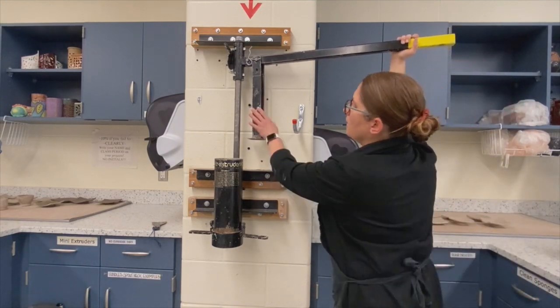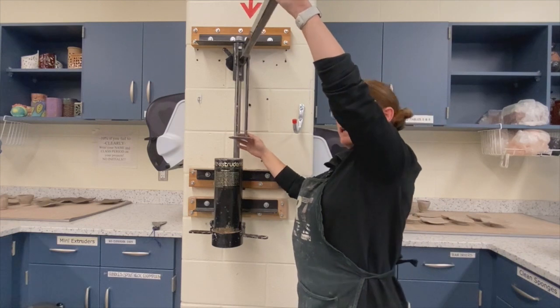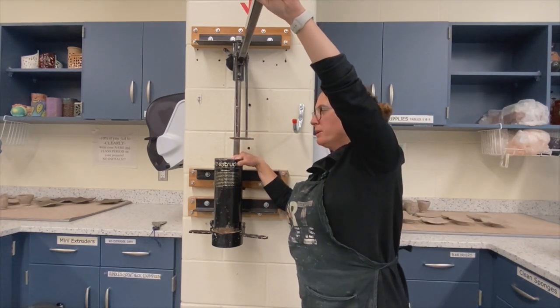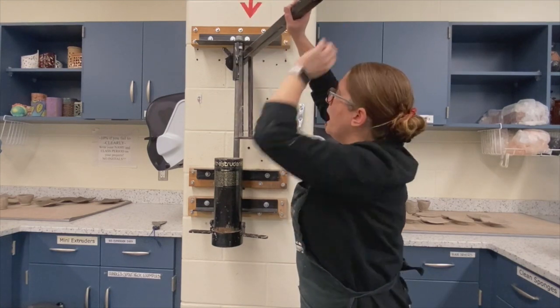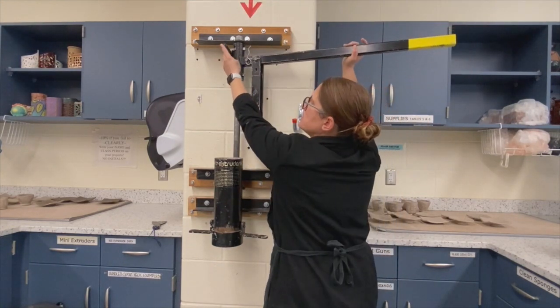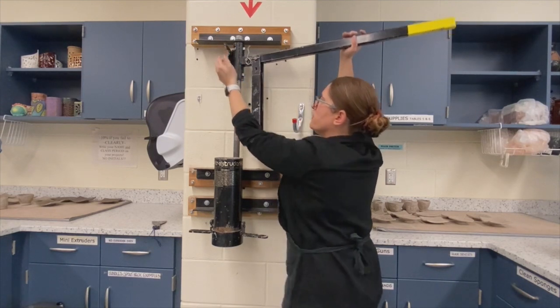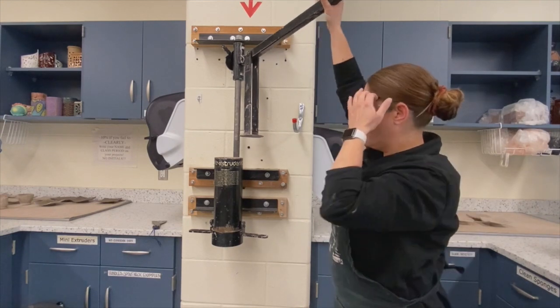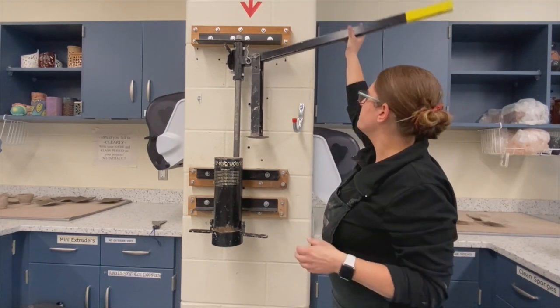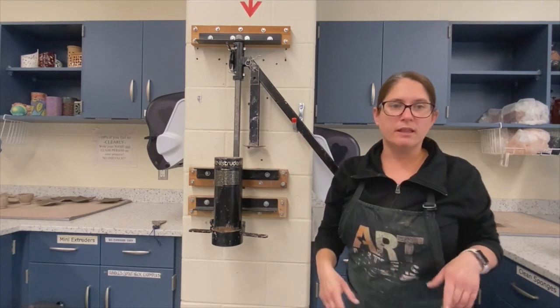This is the plunger part. That part is what is going to go down into the cylinder and push the clay down through those die cut holes. Up here is the locking mechanism, and this is going to be important because it's going to help us to lower the lever. I'm going to put this handle back down and grab my clay that I have wedged.